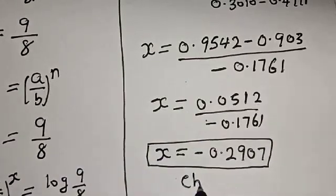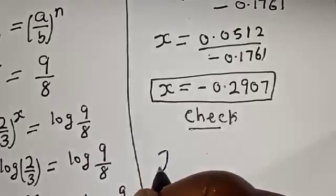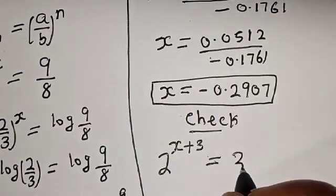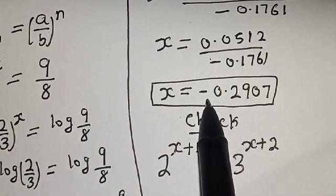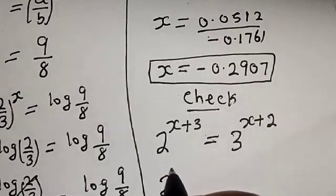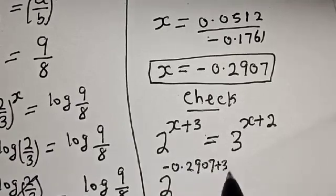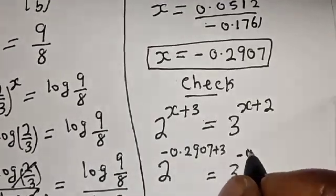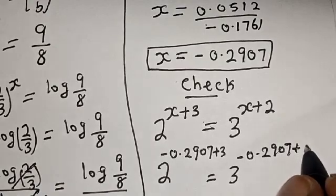Let's check. We have the given equation: 2 raised to power x plus 3 is equal to 3 raised to power x plus 2, and x equals negative 0.2907. Substituting: 2 raised to power negative 0.2907 plus 3 is equal to 3 raised to power negative 0.2907 plus 2.